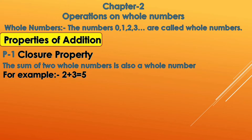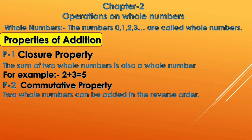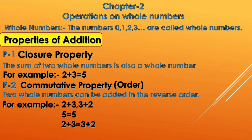The second property is called commutative property, which we also call the order property. If you change the sequence or reverse the order of the whole numbers, the answer remains the same. For example, 2 plus 3 and 3 plus 2 both give the answer 5. That means two whole numbers can be added in reverse order.